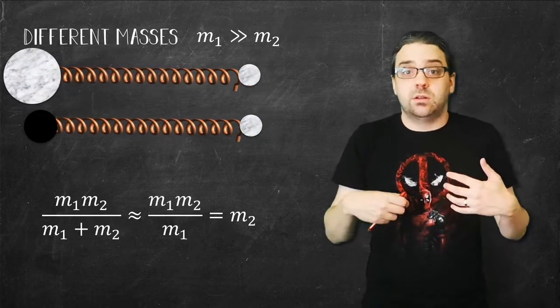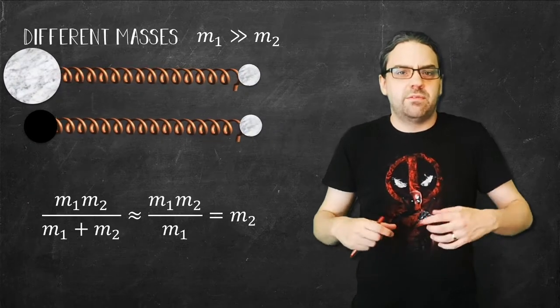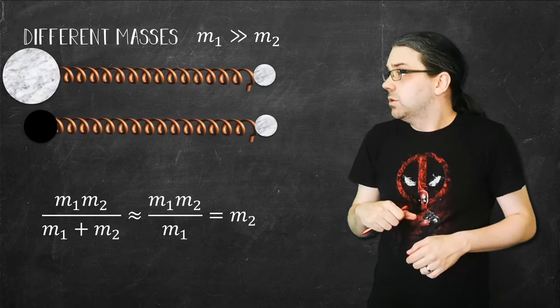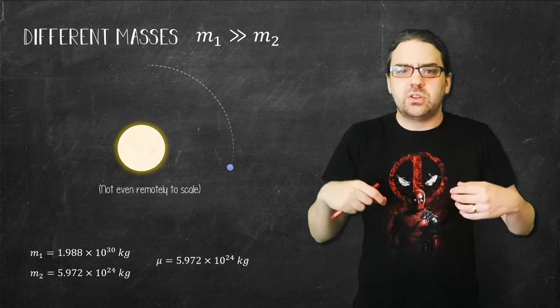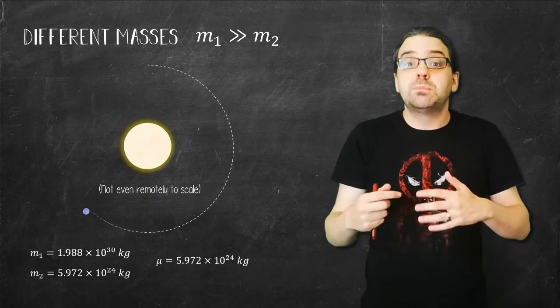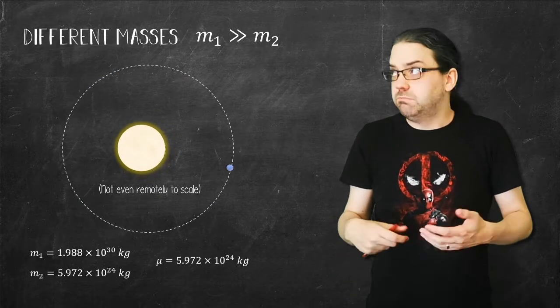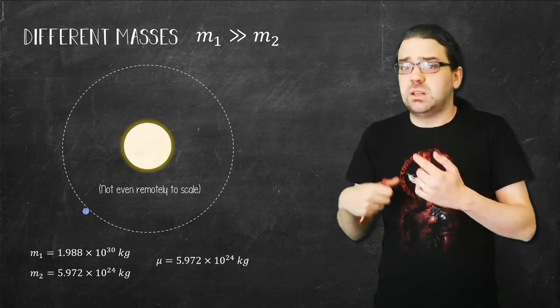This latter case makes a lot of sense if you consider systems that have a very big difference in their mass. For instance, the Earth appears to orbit the Sun because it's so much smaller. The reduced mass of that system is virtually the same as the Earth's mass within many reasonable error. So the systems actually look the same.